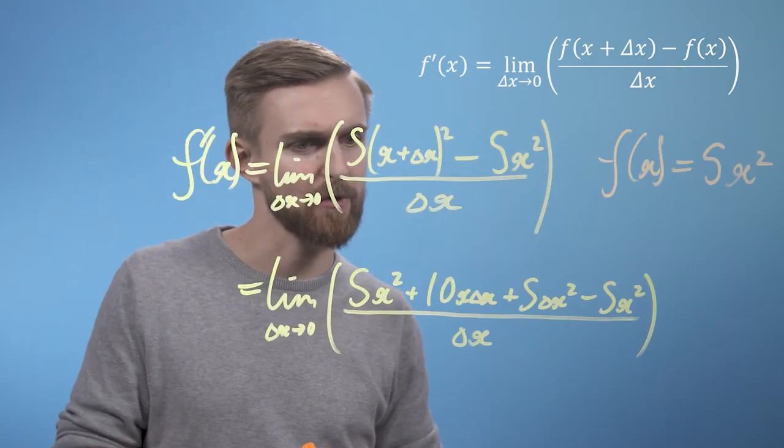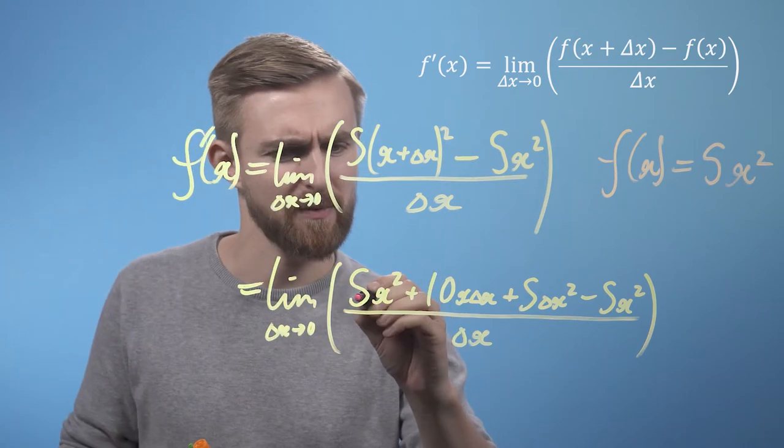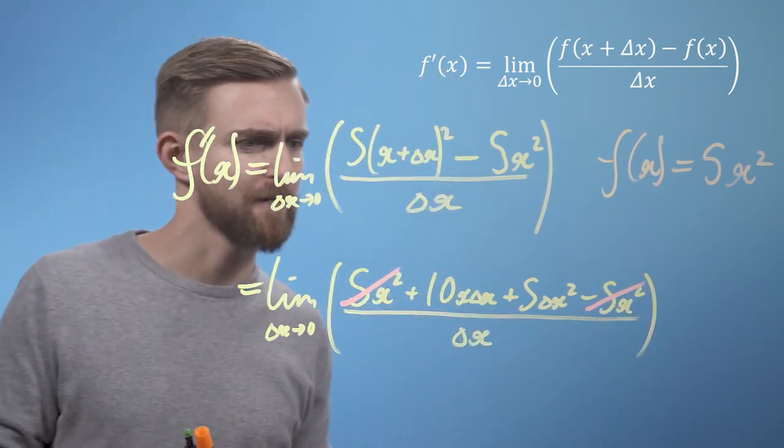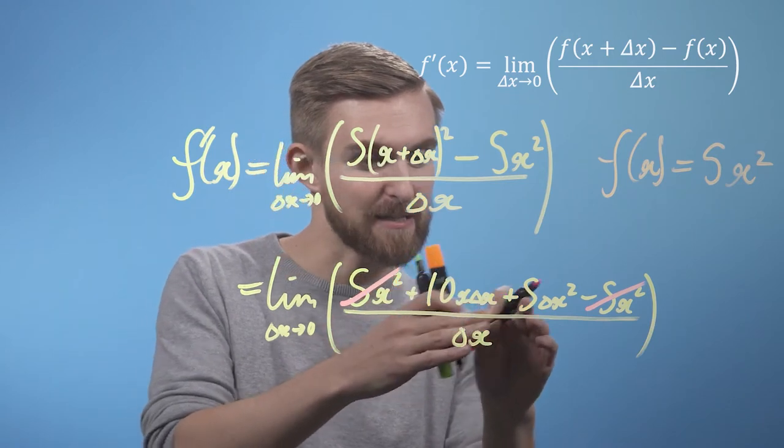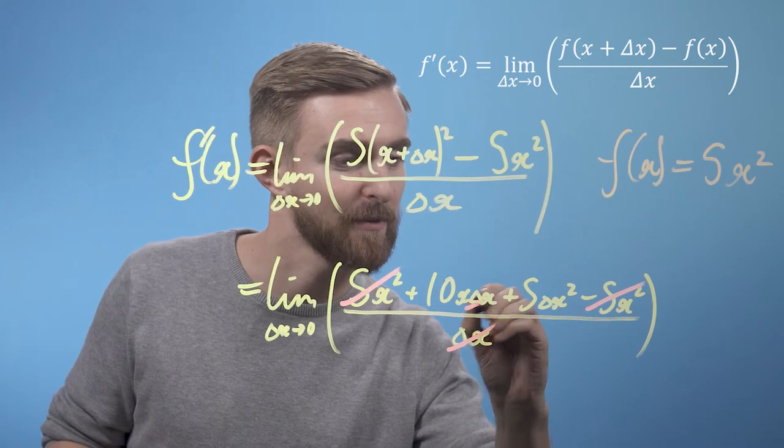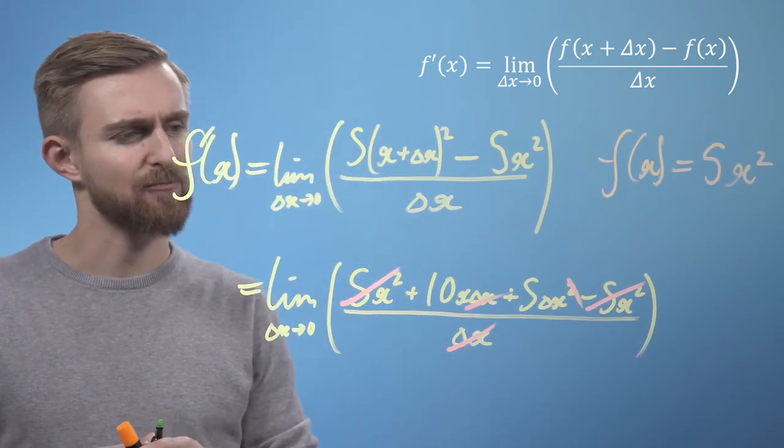And now, what have we got on this top row here? So, we've got a pair of 5x squareds. So we can get rid of those, because it's 5x squared and minus 5x squared over here. Okay? And we can also see that we've got a delta x in both the top terms, and also in this bottom term here. So, we can get rid of that with this and this over here. Okay? So, let's write that line again.